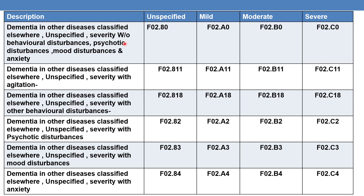Here you can see dementia in other diseases classified elsewhere. The same logic is applicable: fifth character 0 indicates without any disturbances; fourth character A=mild, B=moderate, C=severe. Fifth character 1 with behavioral disturbances; sixth character 1 with agitation, sixth character 8 with other behavioral disturbances. Fifth character 2=psychotic disturbances, 3=mood disturbances, 4=anxiety. This is the entire code set for dementia in other diseases classified elsewhere.